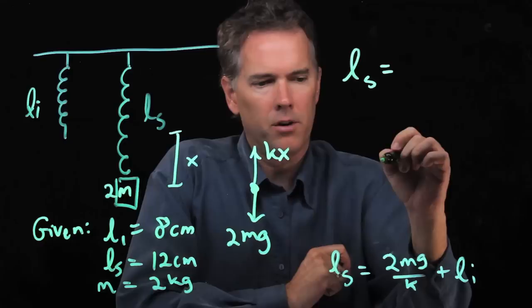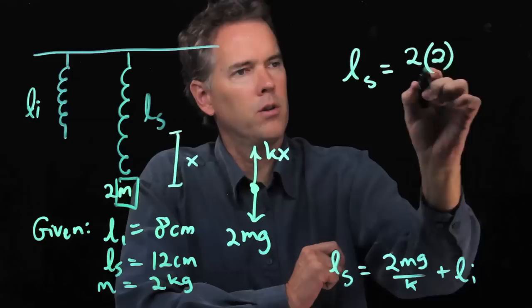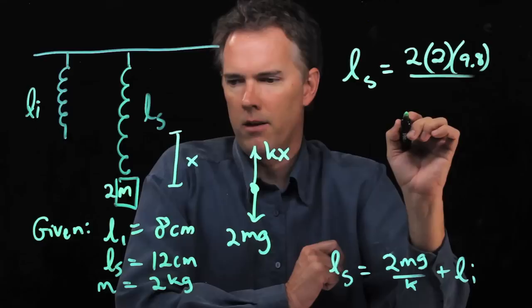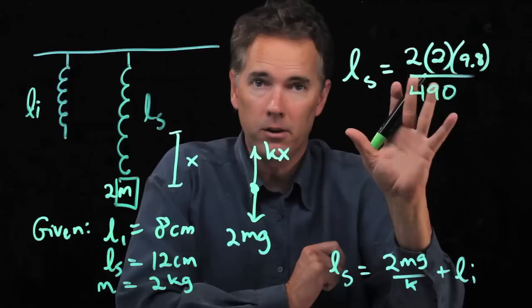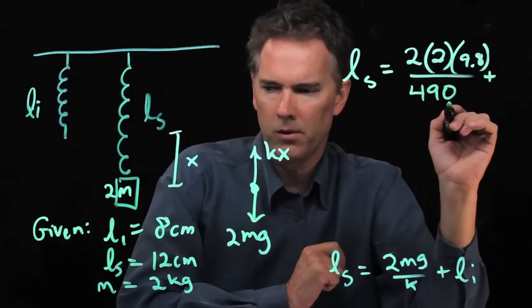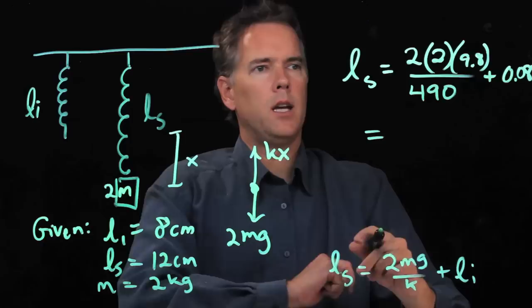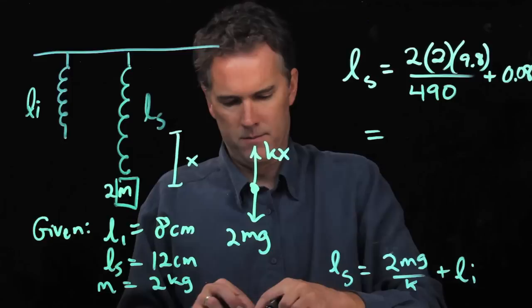The numbers are: we've got a 2, our original mass which was 2 kg, we've got G which is 9.8, we're going to divide all that by K which we found was 490—that doesn't change, it's the same spring—and then we have to add Li which was 8 cm, or 0.08 in SI units. Let's see what we get.